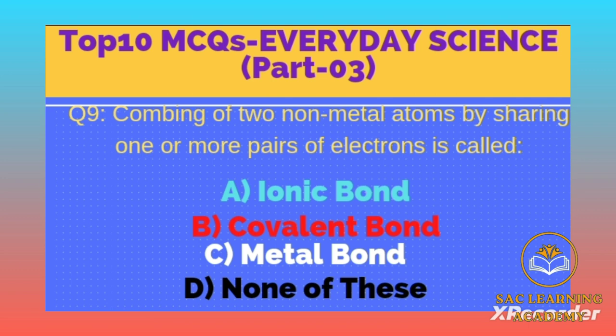Question number 9: The joining of two non-metal items by sharing one or more pairs of electrons is called — Option A: ionic bond, B: covalent bond, C: metal bond, D: none of these. Correct option is B, covalent bond.